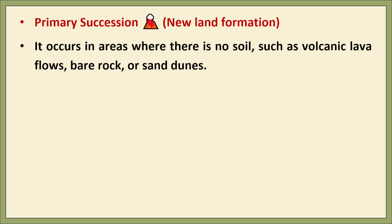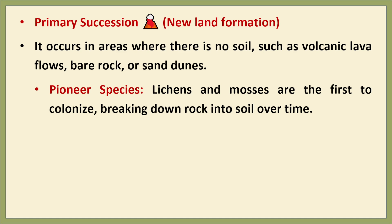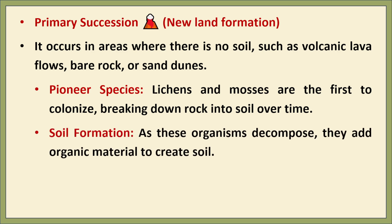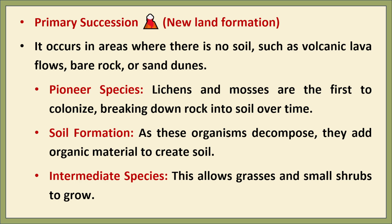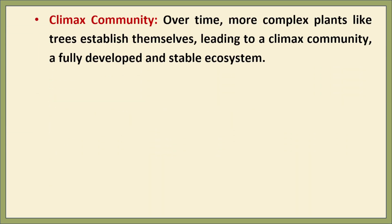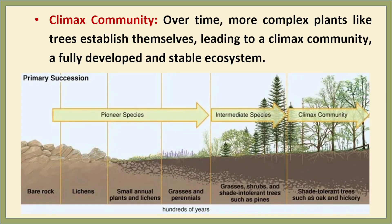Primary succession begins with the colonization of pioneer species that can survive in harsh conditions. Lichens and mosses are typically the first organisms to colonize the area; they secrete acids that break down rocks into soil. As these species die and decompose, they contribute organic matter to the developing soil. Next, grasses, herbs, and small shrubs begin to grow as soil becomes richer. Finally, in the climax community stage, large plants and trees establish themselves, leading to a stable and diverse ecosystem. This diagram illustrates primary succession beginning with bare rock and progressing through multiple stages over hundreds of years.